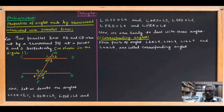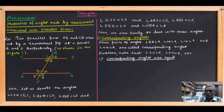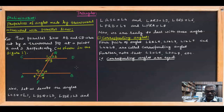There are four pairs of corresponding angles: angles 2 and 6, angles 3 and 7, angles 1 and 5, and angles 4 and 8. Corresponding angles are equal: angle 2 equals angle 6, angle 3 equals angle 7, and so on. You can verify this through the properties of corresponding angles.